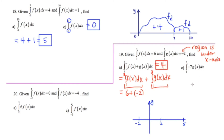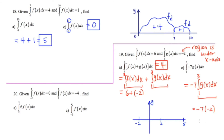Looking at 19c, the first thing I notice is the constant negative 7 in front. I can write this as negative 7 times the definite integral from 1 to 3 of G. The function G is defined by one of our clues as negative 2, so it's going to be negative 7 times negative 2, for an answer of 14.